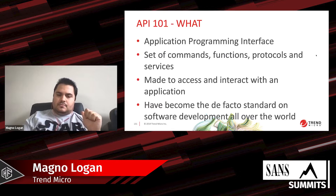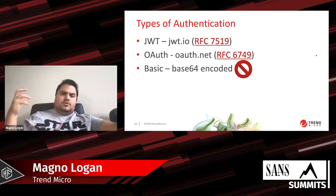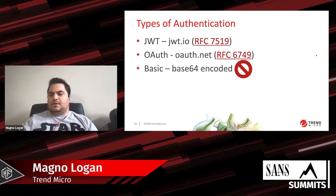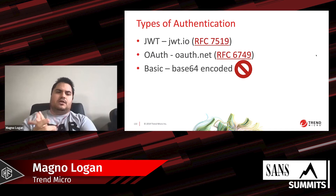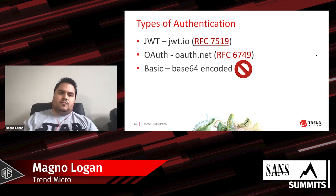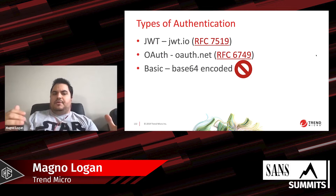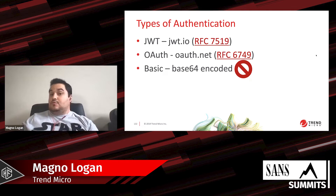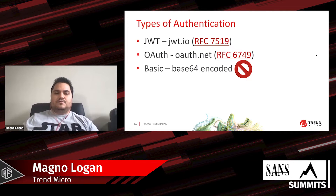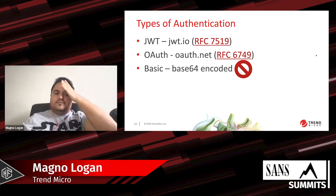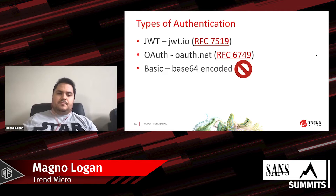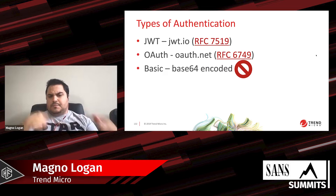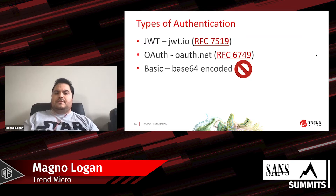With web applications before, you had a username and password, you'd get a session ID and a cookie — that was it. With APIs there are different things. First there are JSON Web Tokens (JWTs) — there was a great presentation this morning by Adrian on JWT attacks and vulnerabilities. There's also OAuth, which is more for authorization, and OpenID Connect. And there's basic authentication using Base64 encoding, which is not recommended anymore. These are things you need to be aware of when starting to pentest APIs.